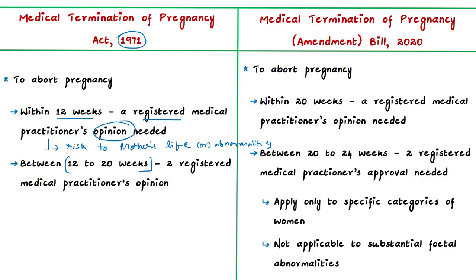As per the 2020 bill, the opinion of one registered medical practitioner is needed to terminate a pregnancy within 20 weeks, and the approval of two registered medical practitioners is needed to terminate a pregnancy between 20 to 24 weeks. Termination between 20 to 24 weeks applies only to specific categories of women. The central government will notify norms for the medical practitioner whose opinion is required.